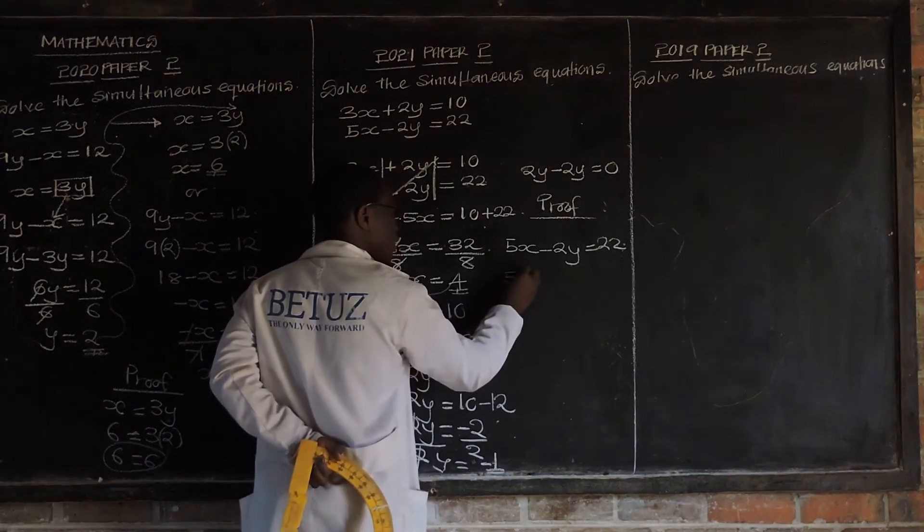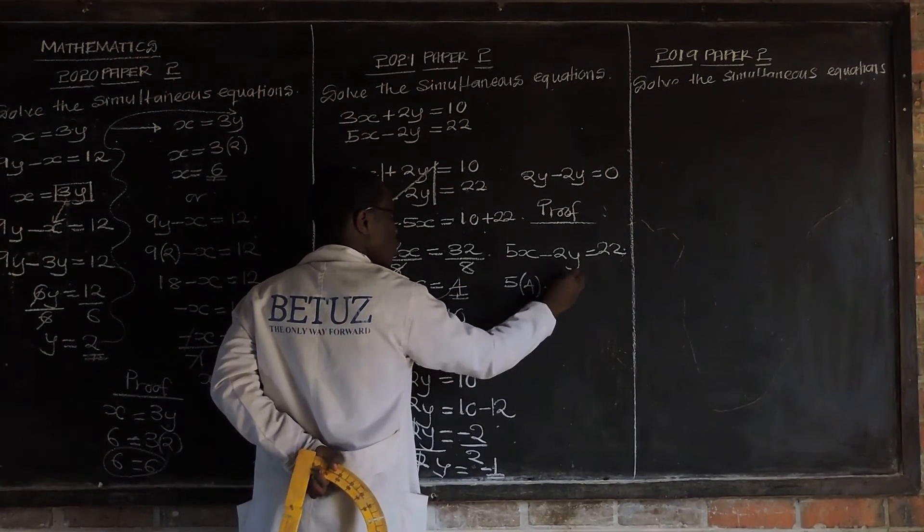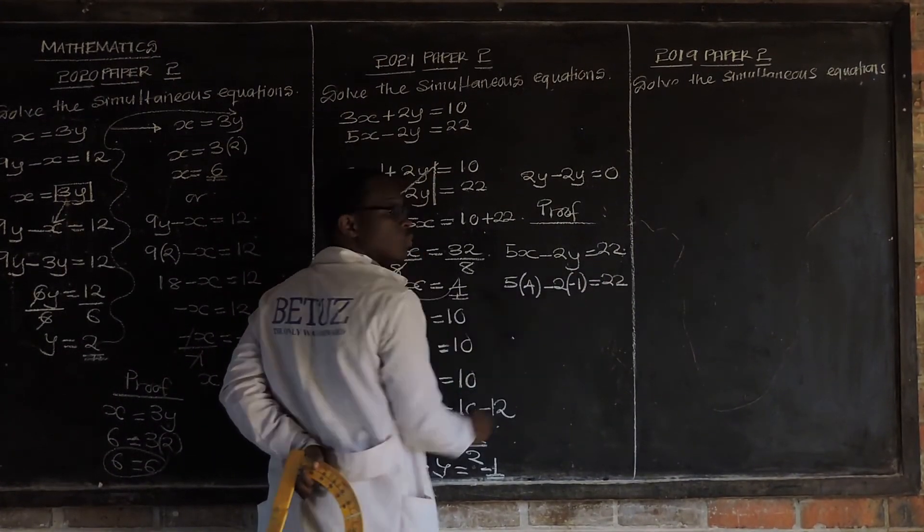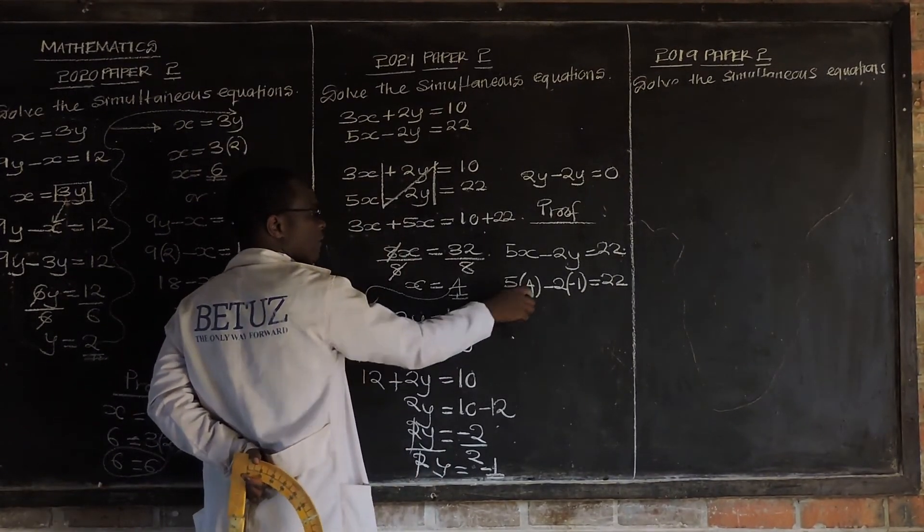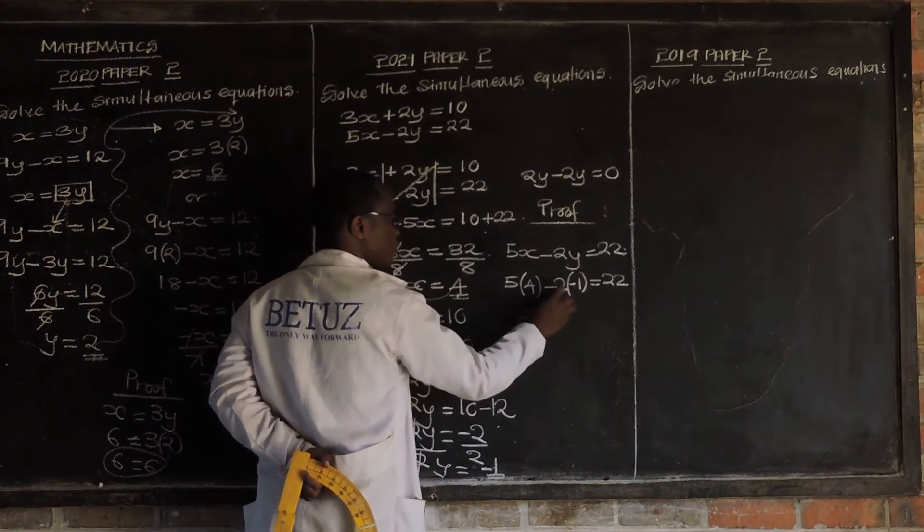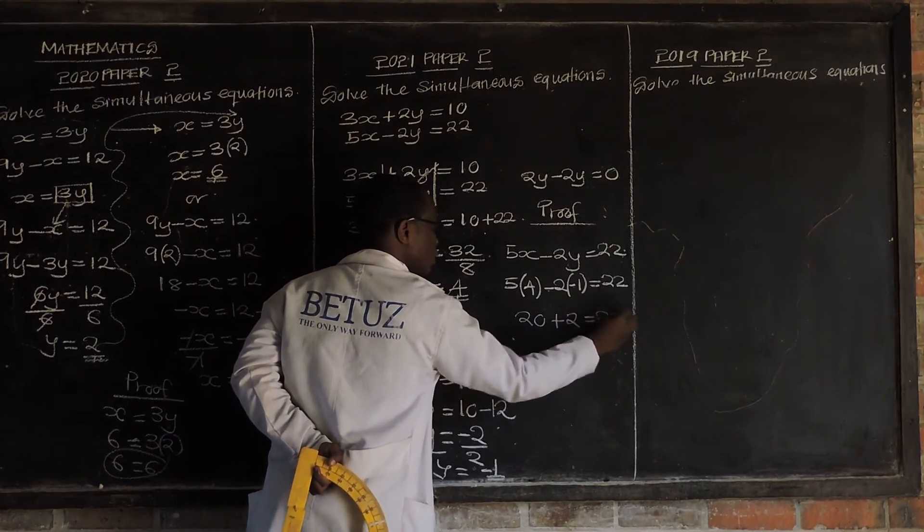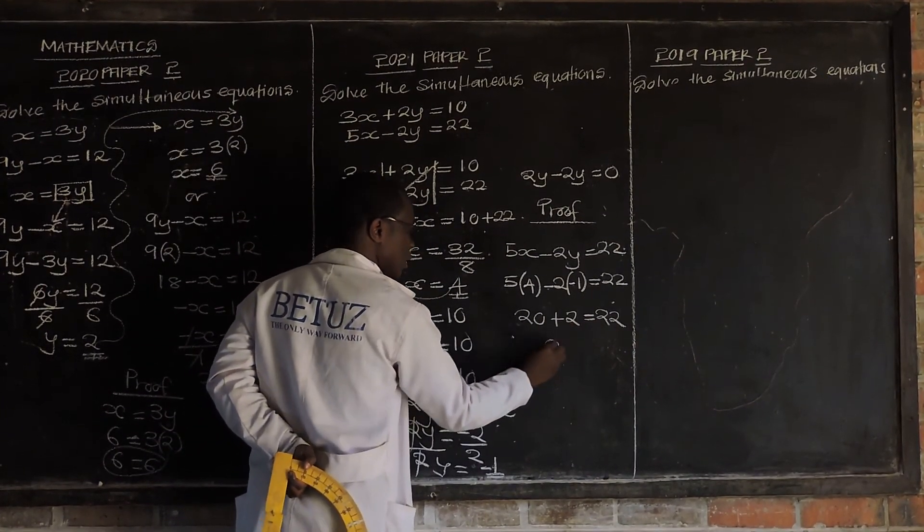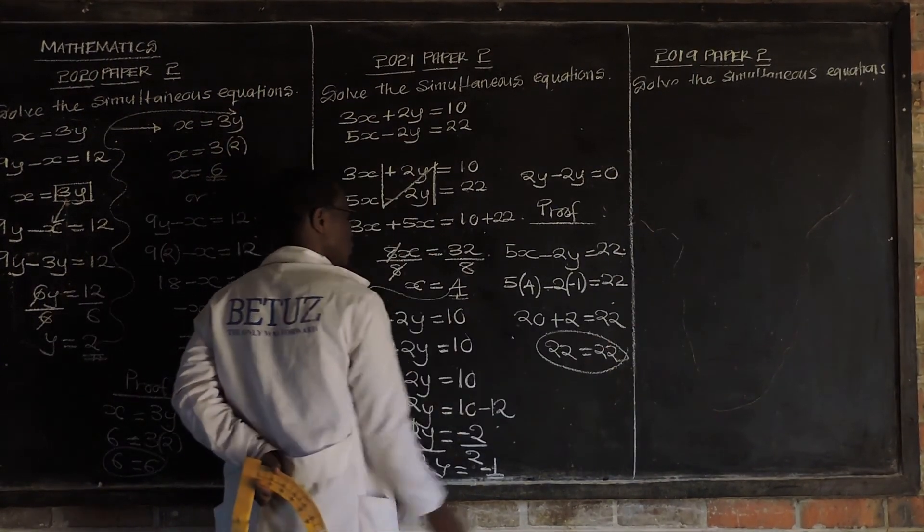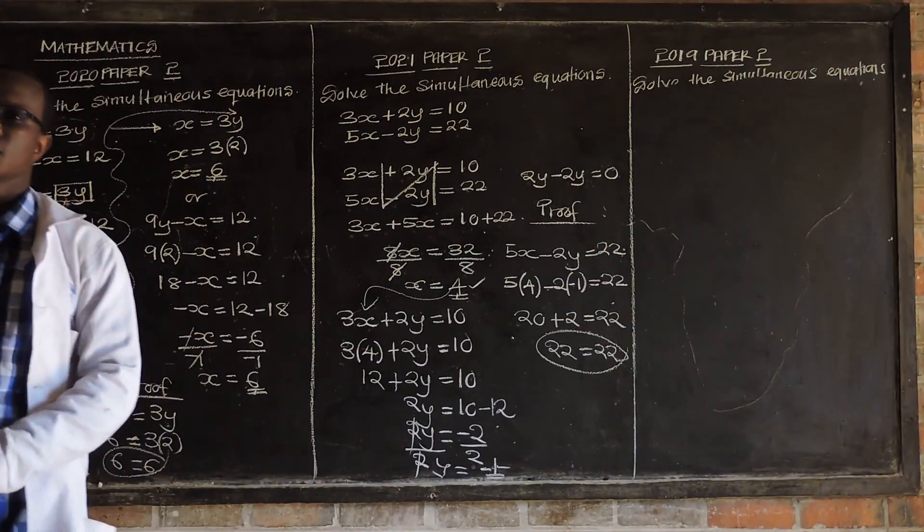So, we have 5 times 4 minus 2 times negative 1 is equal to 22. Then what is 5 times 4? 20. Negative times negative is positive. 2 times 1 is 2. You get 2 is equal to 22. 20 plus 2, you get 22. 22 is equal to 22. So, these are correct. One more.